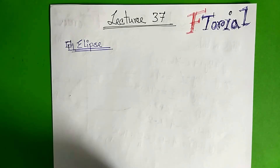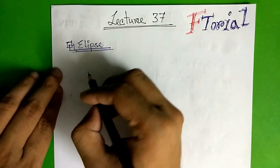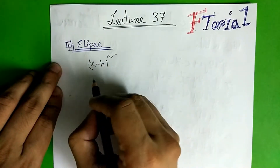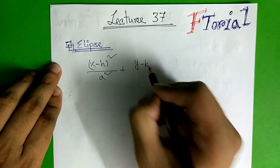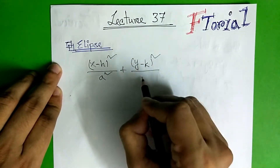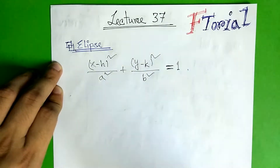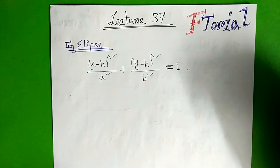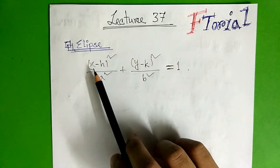Today I am going to see ellipse. So ellipse is the general equation — x squared over a squared plus y squared over b squared equal to 1. I am going to see the equation of the ellipse, which is the general form, same as h.